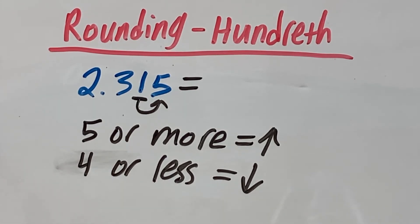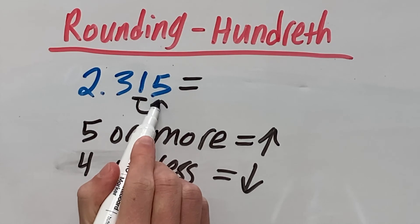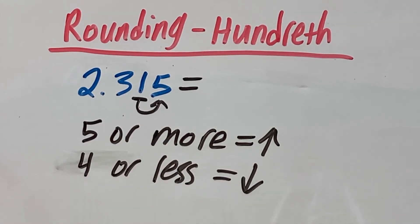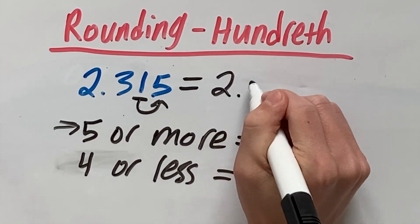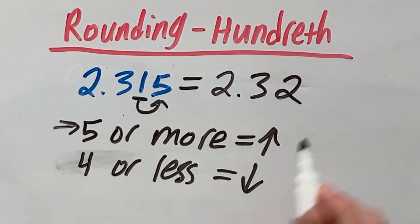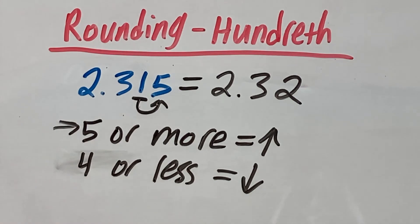Now we look at the rule. Is this number here, so 5, is it 5 or more or 4 or less? It is 5 or more, which means we round the hundredth place up. Our answer will be 2.32 because we round the 1 up to 2.